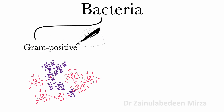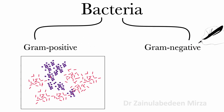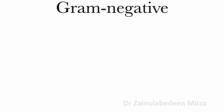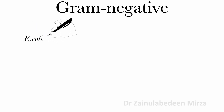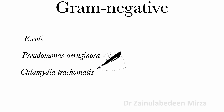Bacteria are divided into gram-positive and gram-negative. There are many gram-negative bacteria, such as E. coli, and pathogenic bacteria, such as Pseudomonas aeruginosa, Chlamydia trachomatis, and Yersinia pestis.